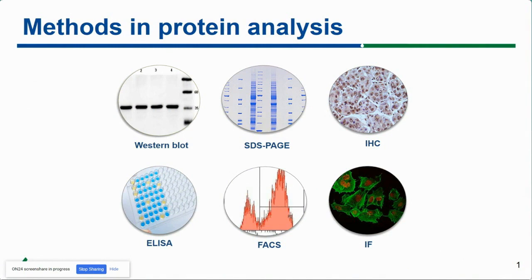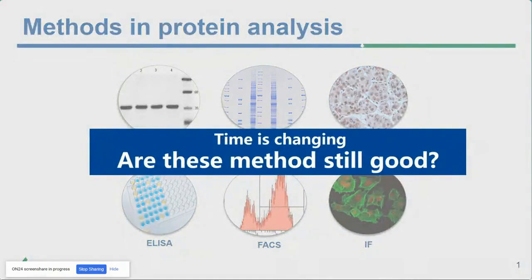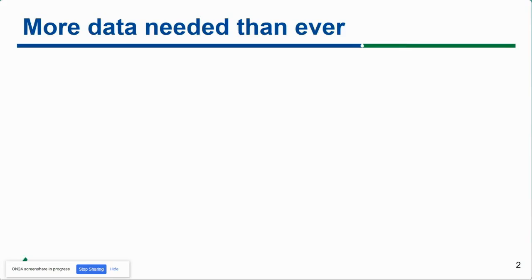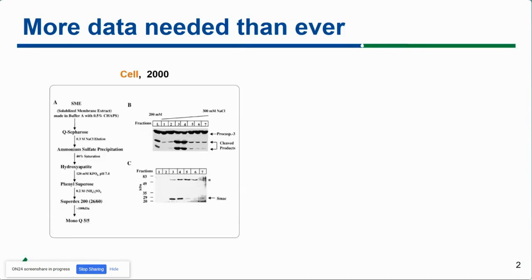One of the central topics here today will be Western blot, where it's a very staple method in many labs. You might have used it in your research as well. As we go through our research, the requirements change with the time, but it seems like this method doesn't change with it. Take an example — this is basically a chart from a Cell paper in 2000. Around that time, the Western results were relatively simple. You could take one different fractionation, look at different fractions, look for your target, and that could make up a very good publication.